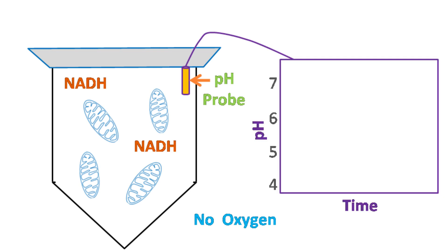If we take the suspension of mitochondria along with NADH and keep it in absence of oxygen and measure the pH, then nothing happens. The pH remains constant. As soon as oxygen is added, the pH of solution outside mitochondria drops.